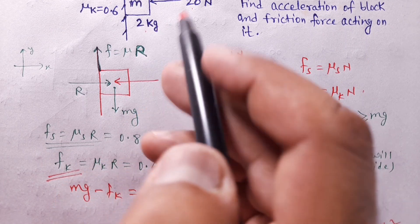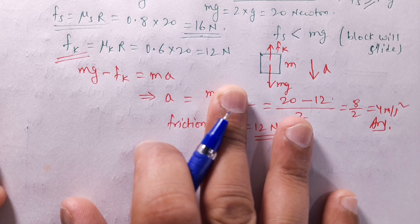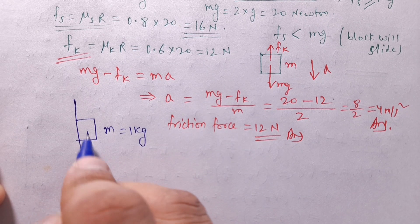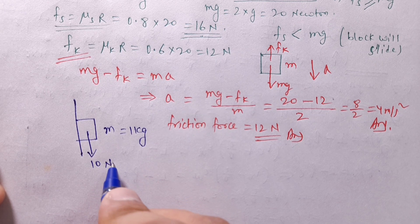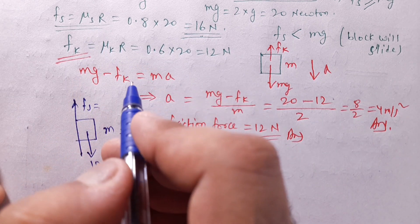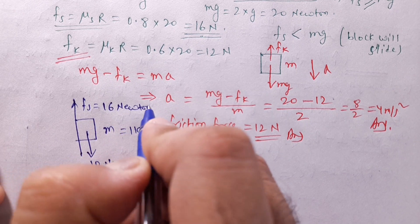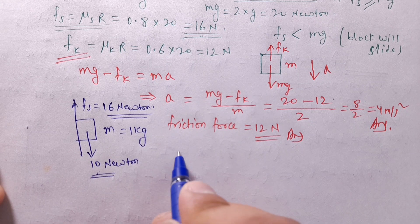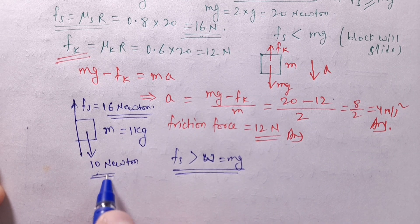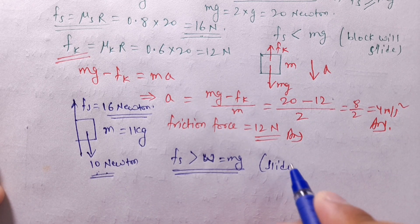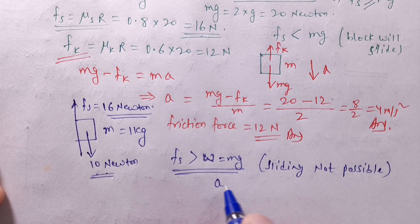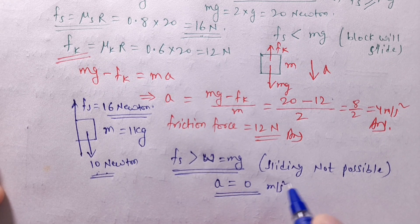Let's change the mass to 1 kg. Then the downward force is 1 × g = 10 Newton. F_static = 0.8 × 20 = 16 Newton. Since F_static (16N) is greater than mg (10N), sliding is not possible. Therefore acceleration = 0 m/s².